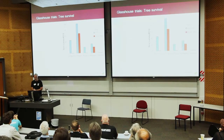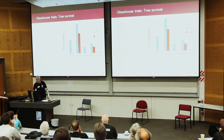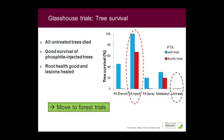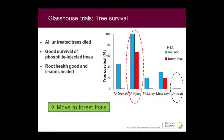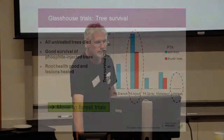Jumping straight to the end result — tree survival — it was pretty clear cut. Looking at the untreated controls, they all died. Every tree inoculated with PTA died, and fairly quickly. In most cases within three or four weeks we were at least seeing symptoms, and by ten weeks pretty much everything was dead. Contrast that to the ones injected with phosphite — both the soil-inoculated and trunk-inoculated trees showed very much the same result. There was a little treatment effect with other treatments, but nothing like what we got with the injection. And as mentioned, we got good root health and lesion healing in the injected trees.